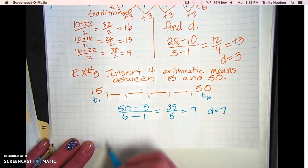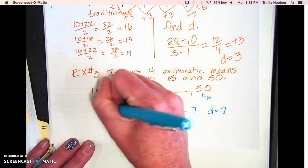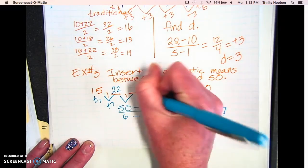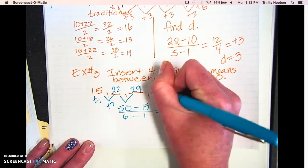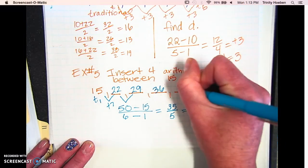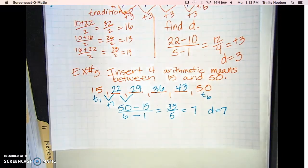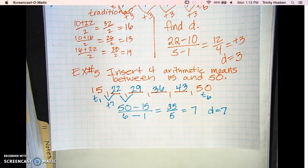So that means we're simply going to add seven each time. So 15 plus seven is 22, 22 plus seven is 29. Just keep adding seven until you get all the way to 50, and you go, ooh, I did it right. All right, great.